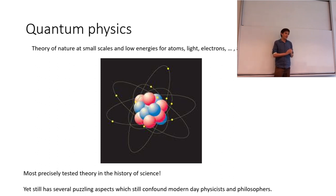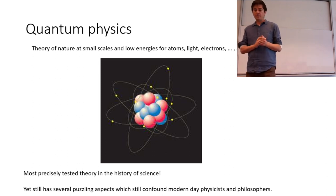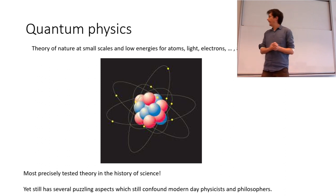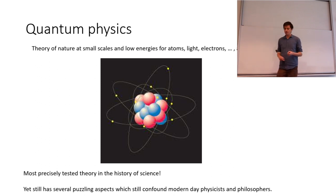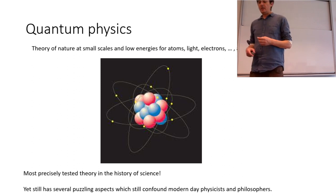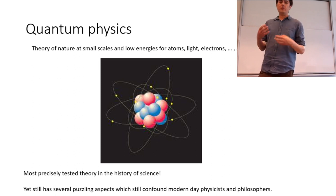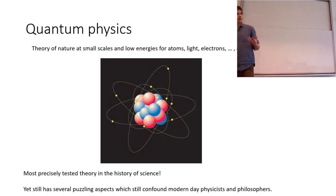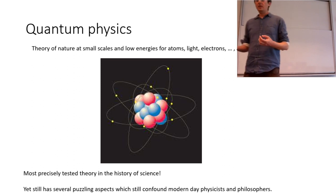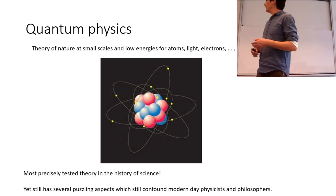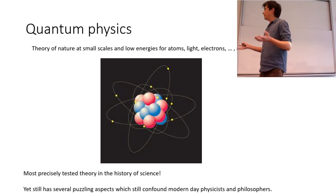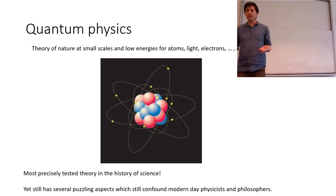So what is quantum physics? Quantum physics is of course the theory of usually very small things — things like atoms, light, electrons. Anything small, you generally should be using quantum mechanics to describe it. Quantum mechanics really started off with people trying to understand a couple of puzzles they couldn't understand. One outstanding problem at the end of the 19th century, the 1800s, was basically what's the structure of an atom and how does it give it the properties that it gives.